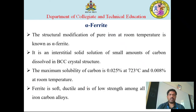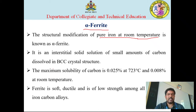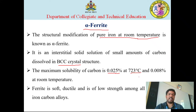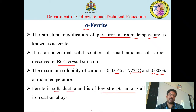Next is alpha ferrite. The structural modification of pure iron at room temperature is in the form of alpha ferrite. It is an interstitial solid solution of small amounts of carbon — 0.002 to 0.025% carbon — and has a BCC crystal structure. The carbon percentage at 723 degrees centigrade is 0.025%, and at room temperature the percentage of carbon is very, very low: 0.008%. Alpha ferrite is very soft, ductile, and of low strength.